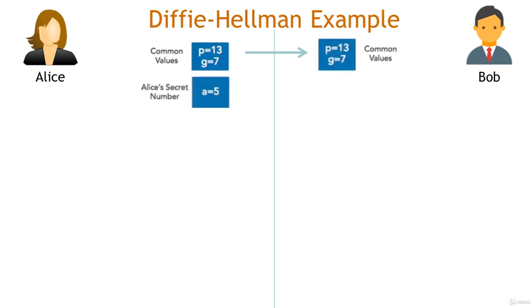Next, Alice chooses a secret number. Let's say that she chooses 5. We'll call that lowercase a. She then computes the value of uppercase A using the formula uppercase A equals g to the lowercase a power modulo p. That's 7 to the 5th power modulo 13, which gives us a value of 11 for A. Alice then sends the value of capital A, which is 11, to Bob.